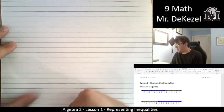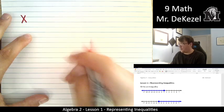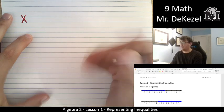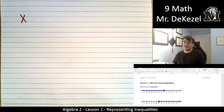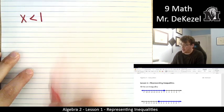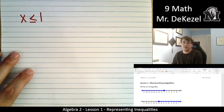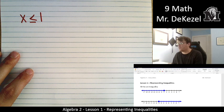In this case, we want x to be less than one. Everything that is being covered is less than one. And the circle is solid, so it's or equal to. Less than or equal to one is what's represented in the first graph.